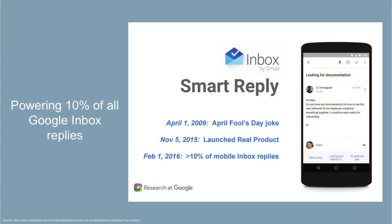The Inbox team at Google launched a feature called Smart Reply, which suggests replies based on the content of an email. It launched originally as an April Fool's joke in 2009, and by the time Jeff Dean discussed it, Smart Reply was generating 10% of all mobile Inbox replies — meaning it's gotten accurate enough that people choose to use it for one in ten replies, based on its understanding of the message context.